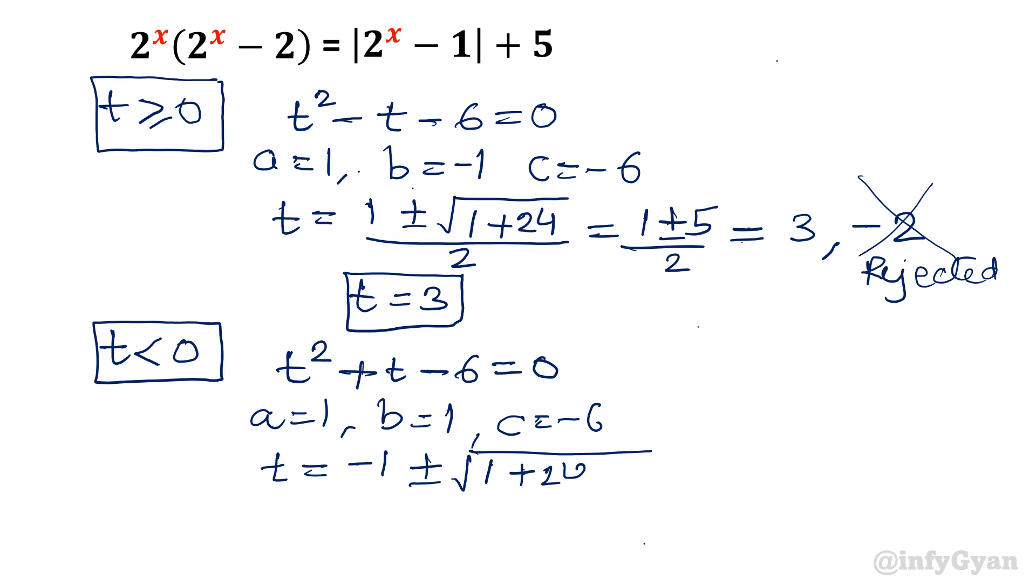T will be equal to minus b plus minus square root 1 plus 24 over 2a. So 2. So that value will come out negative 1 plus minus 5 over 2. So if you will take plus sign in between then minus 1 plus 5. So 4 over 2. So 2, or take minus sign, so minus 3.